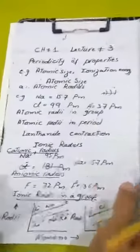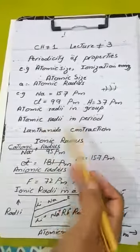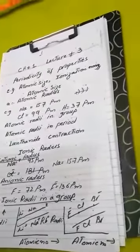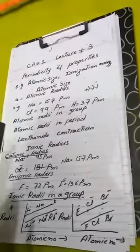Atomic radii increase from top to bottom of a group. In a period, atomic radii decrease from left to right. The reason is that no extra shells of electrons are added, but positive charges increase — the nuclear charge increases and the force of attraction increases. That is why atomic radii in a period decrease from left to right.